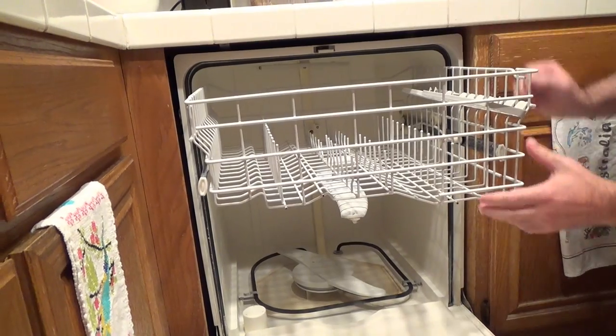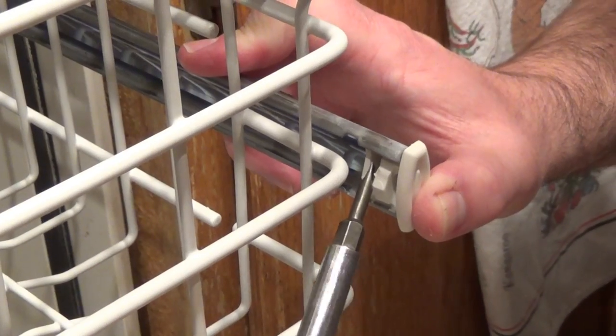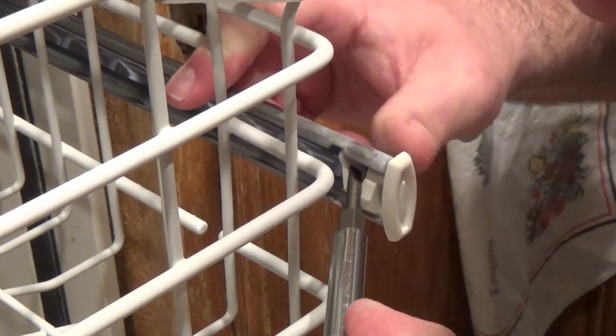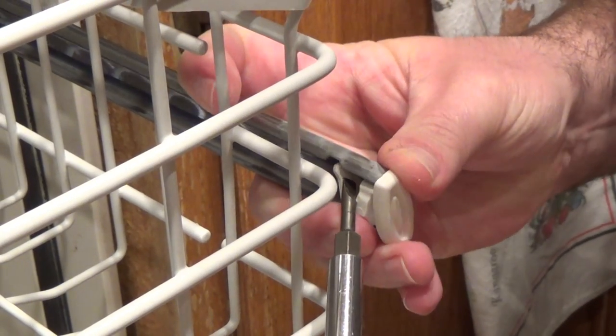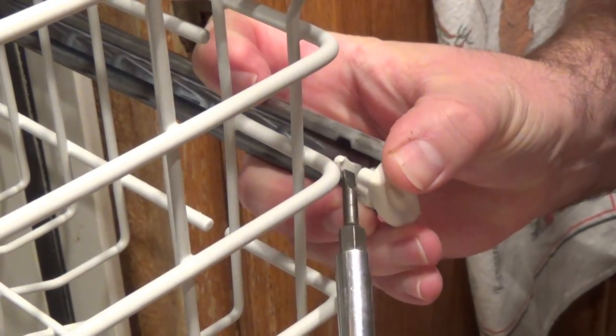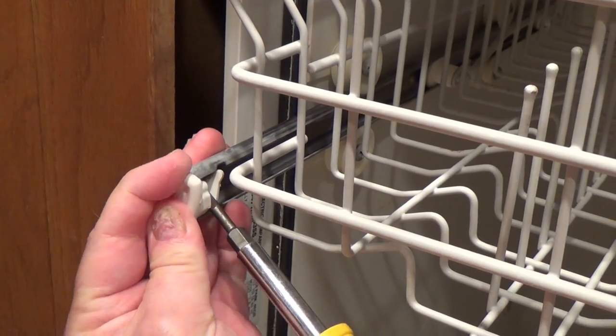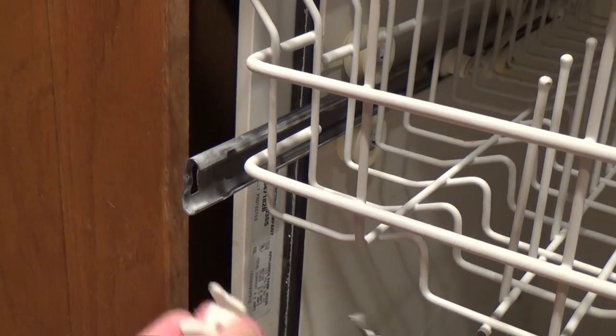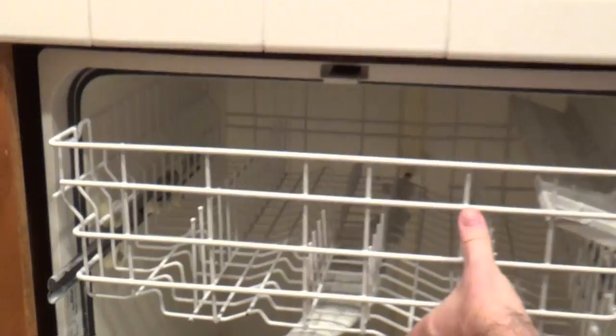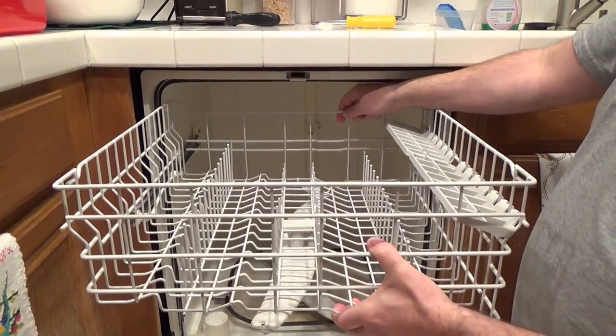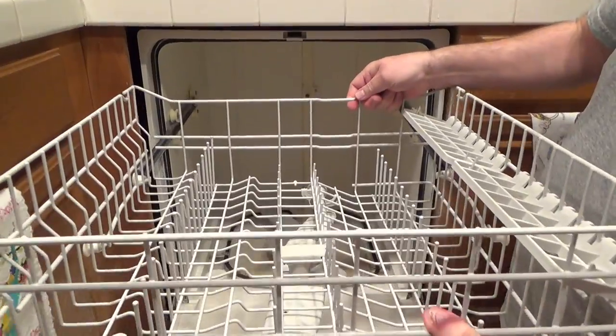Next, we're going to take out the top rack. To remove this clip, you pry this little tab until it goes all the way back, and then you push the clip to the middle, and it comes out. Pry it over, and tip it in, and it comes out. Then you can pull the top rack out.